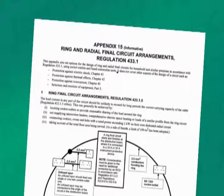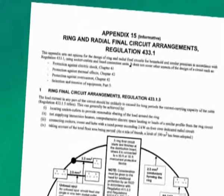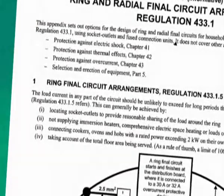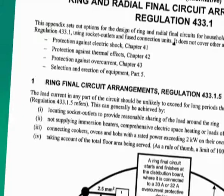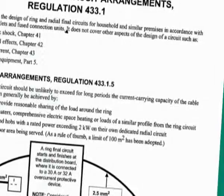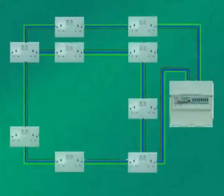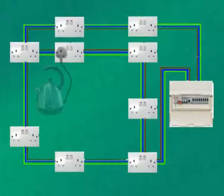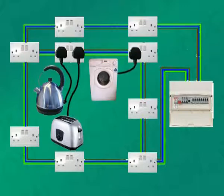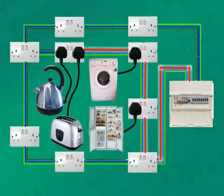You won't see bridges and interconnections ruled out specifically in the regulations. But the requirements of Regulation 433.1.5 need to be met. One of these is that the load current in any part of the circuit is unlikely to exceed for long periods the current carrying capacity of the cable. It's quite possible, in a poorly installed ring circuit with bridges or interconnections, that multiple heavy loads could cause an increased current on specific parts of the circuit. So bridges and interconnections should be avoided.